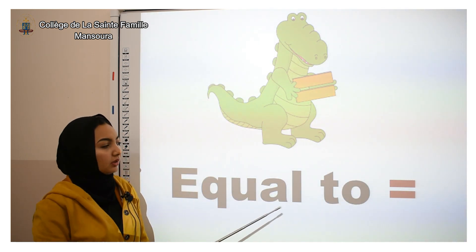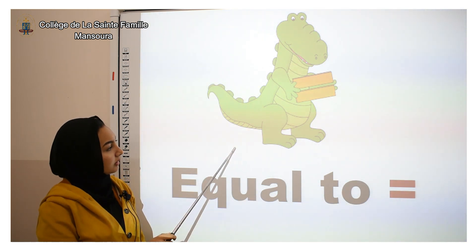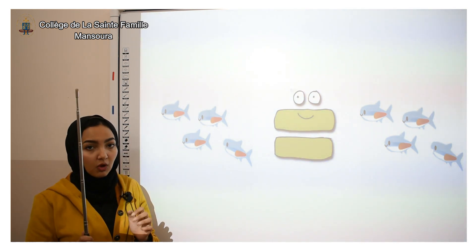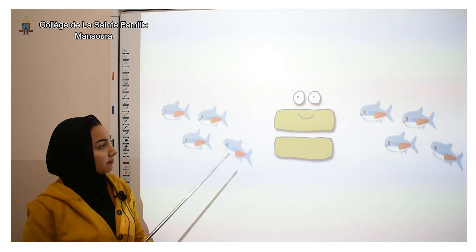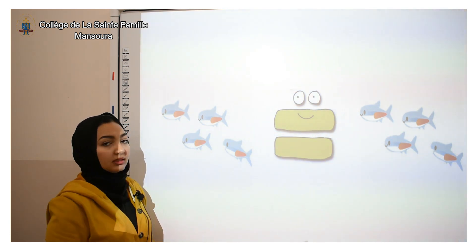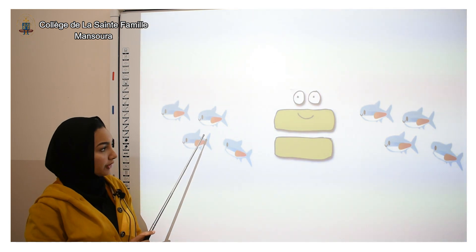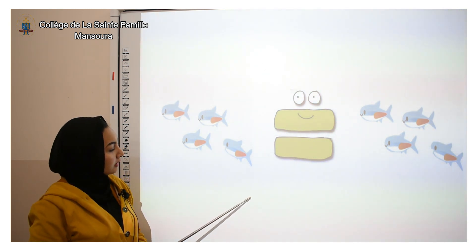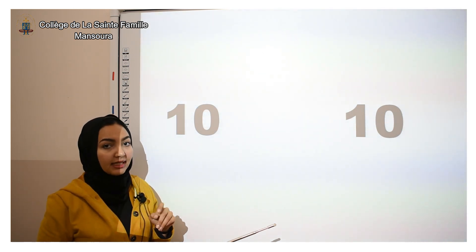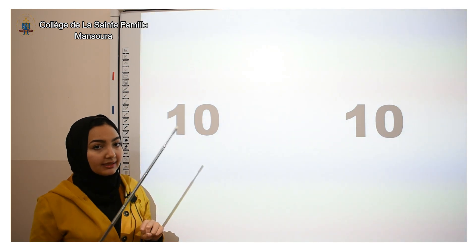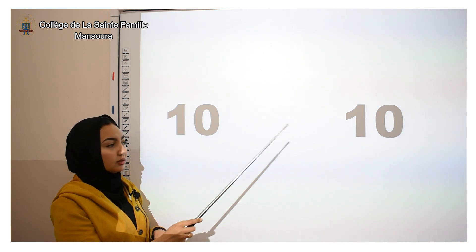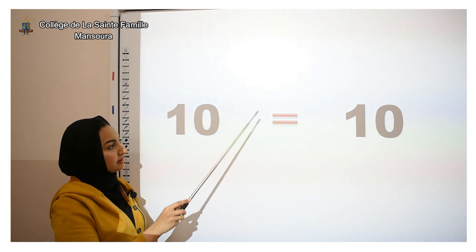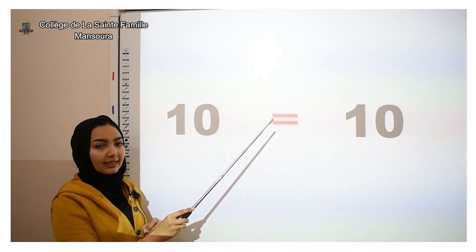Now the last one: equal to. We have two groups of fish — are they the same or different? Yes, they are the same; each group has four fish. So four equals four. Equal means that they are the same. Ten is the same as ten, so we read it like: ten is equal to ten. Equal to means they are the same.